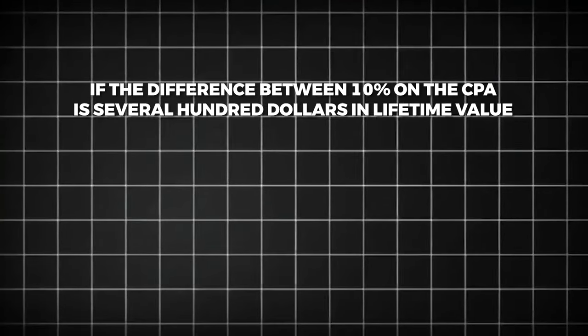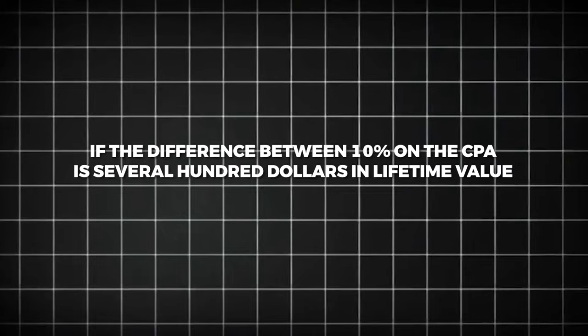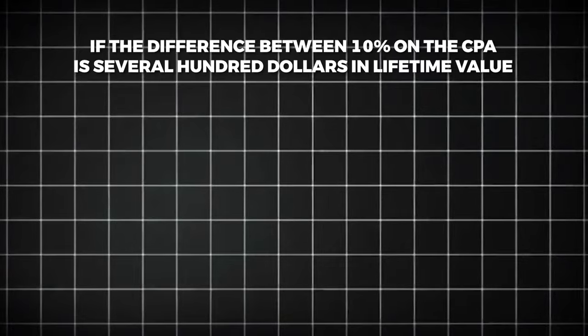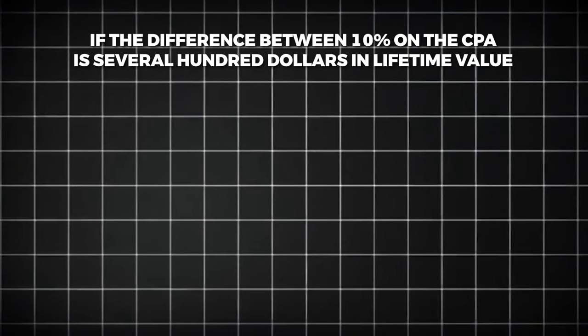Let's take a quick break and do some math. If you know you could get a sale for 10% cheaper on the best ad, that's great. But what if for 10% more, that customer was two or three times more likely to spend three to five times as much, giving you a two or three X multiple on the lifetime value of the average customer that bought that product? If the difference between a 10% lower CPA is several hundred dollars in lifetime value, are you really doing the best service as a performance marketer by driving the lowest CPA? The answer is no.